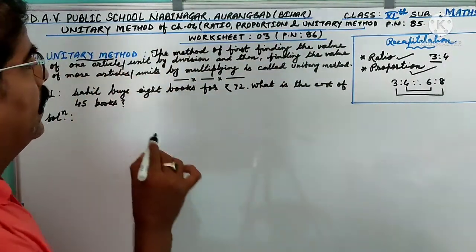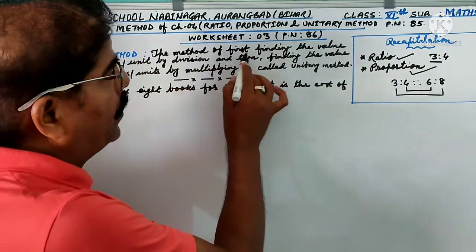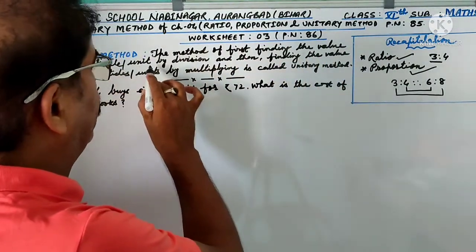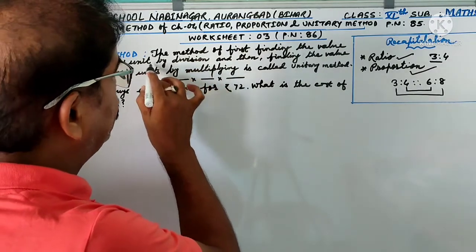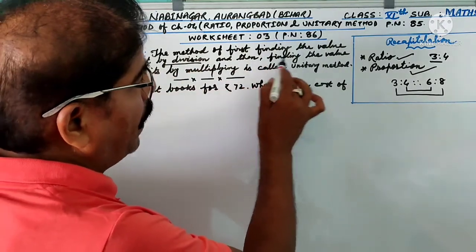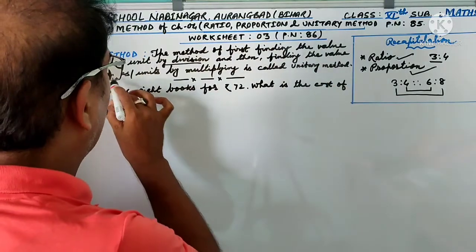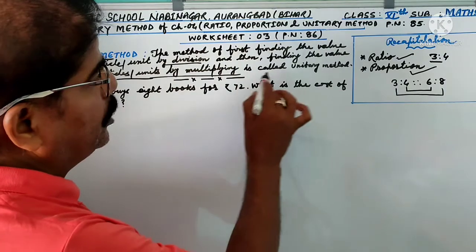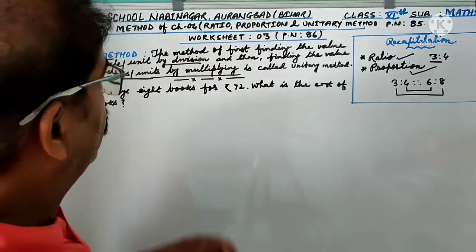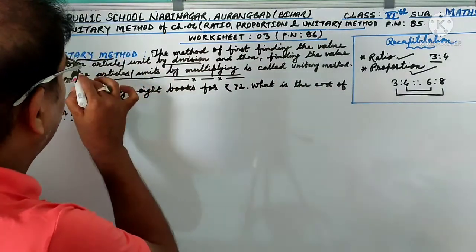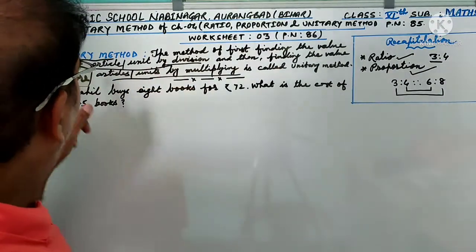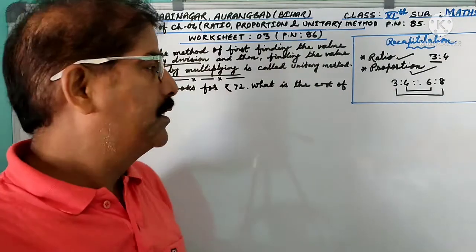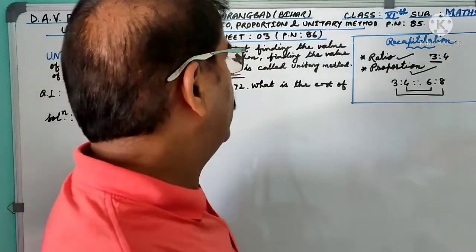In essence, the method of first finding the value of one article by division and then finding the value of more articles by multiplying is known as unitary method. Finding one article by division and finding more articles by multiplying is known as unitary method.